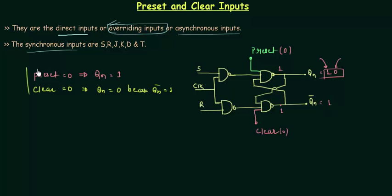So this is an important thing that you have to keep in your mind. QN is equal to 1 when preset is 0, and QN is equal to 0 when clear is 0, and it will not see what is the value of S, R, J, K, D, and T, or whatever be the value of clock. It is going to give this output.